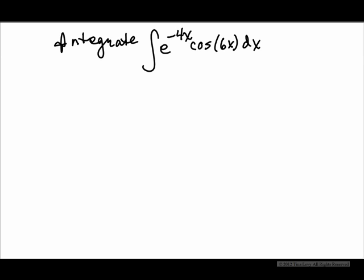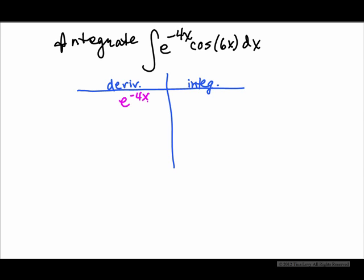We're going to do the integration of e to the negative 4x cosine 6x, and I'm going to show you a shortcut we call the Ryan Tyler shortcut. It's very much like the tic-tac-toe from the Stand and Deliver movie. To start with, we set up our table with derivative and integral columns. We're going to make e to the negative 4x the derivative, and cosine 6x is what we integrate.